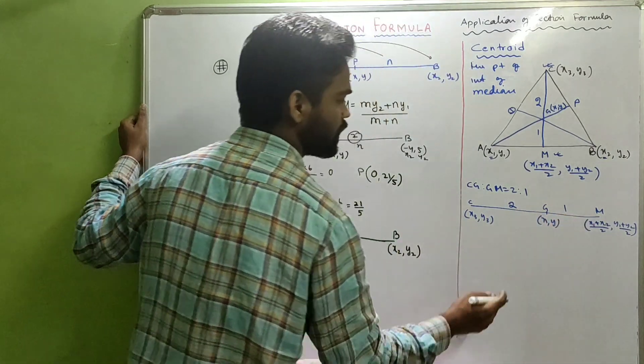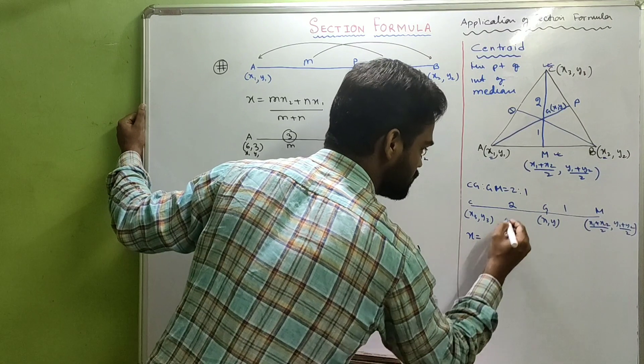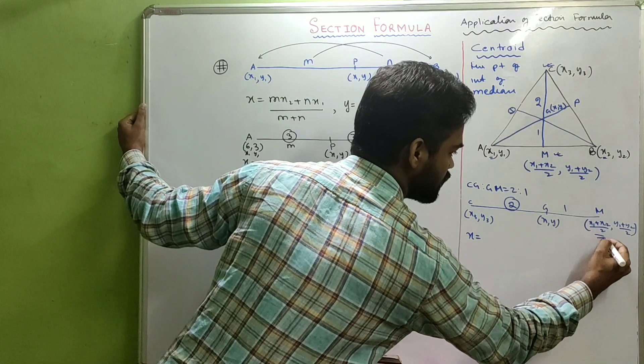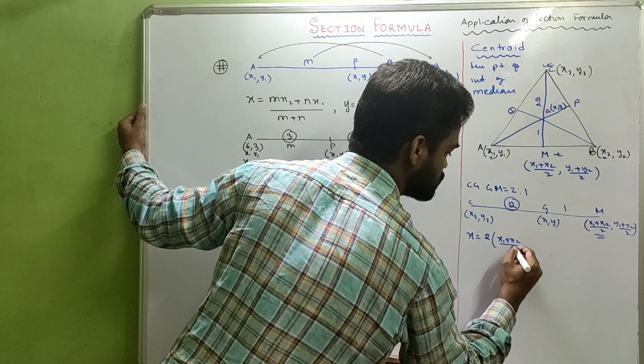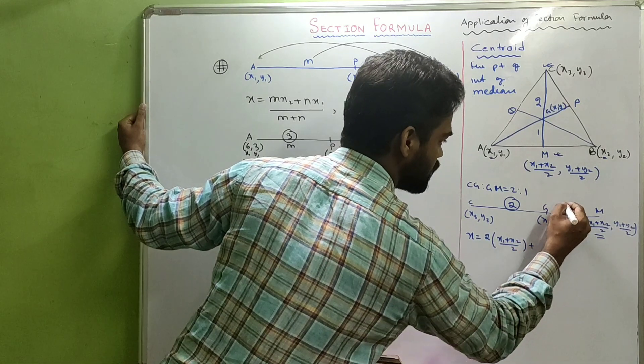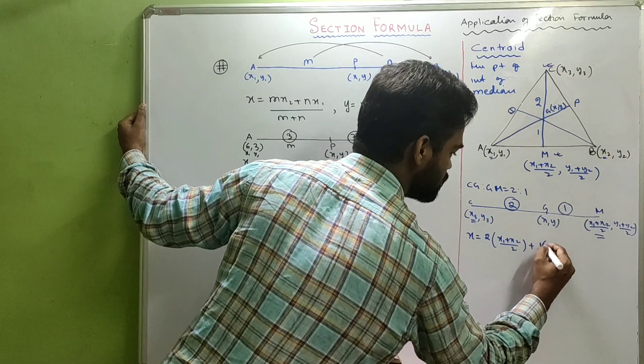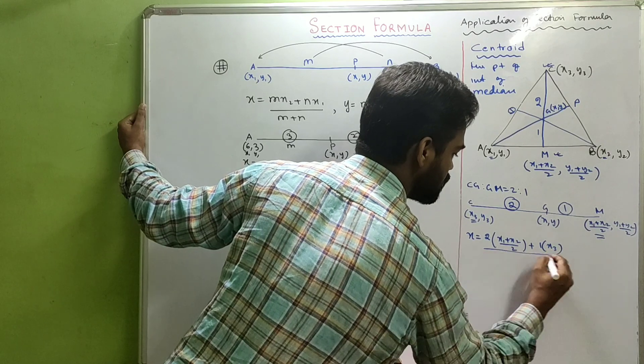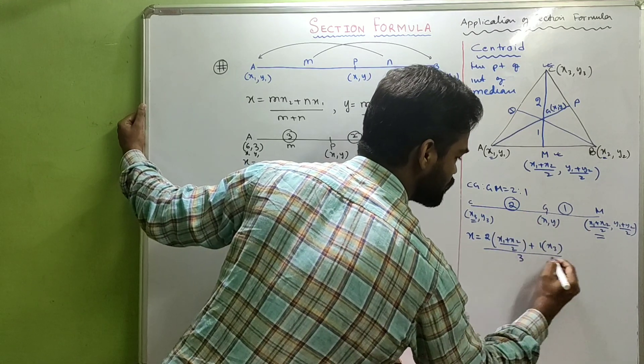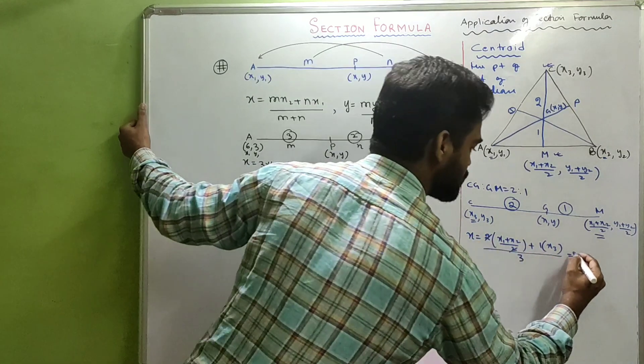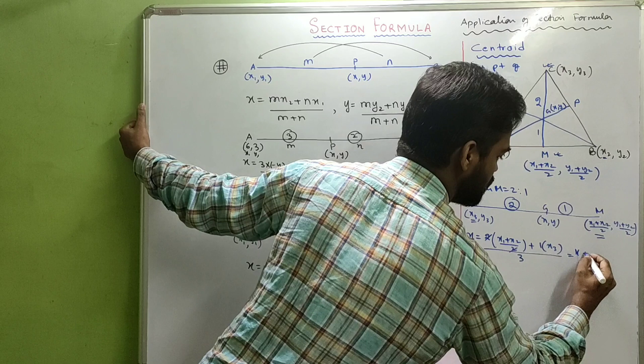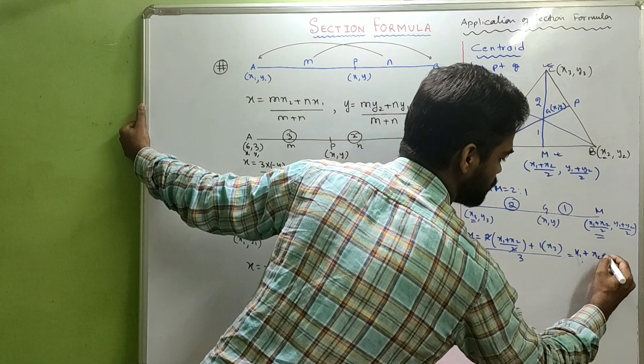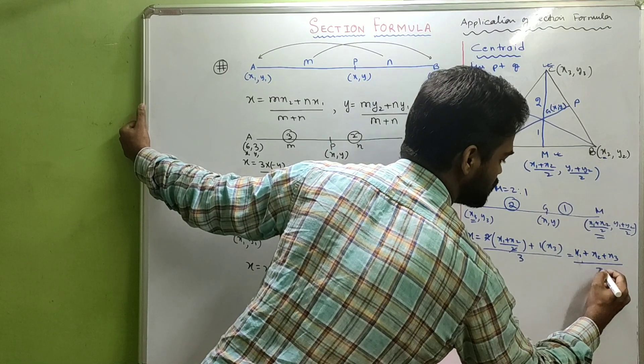Then your X will be: M into this coordinate, which is twice of X1 plus X2 by 2, plus N into this coordinate, which is X3, by 2 plus 1, that's 3. So, this and this cancels out. So, this becomes X1 plus X2 plus X3 by 3.